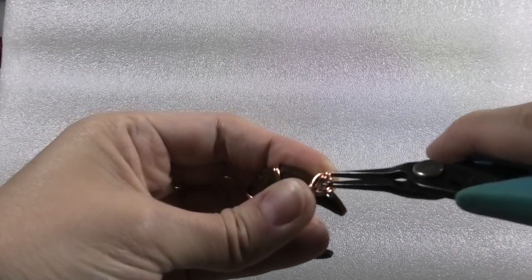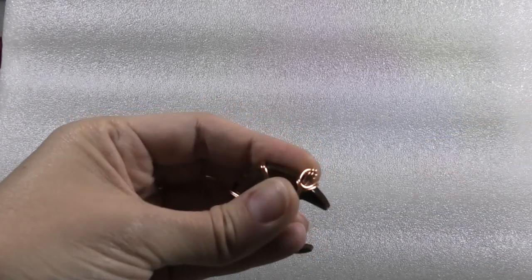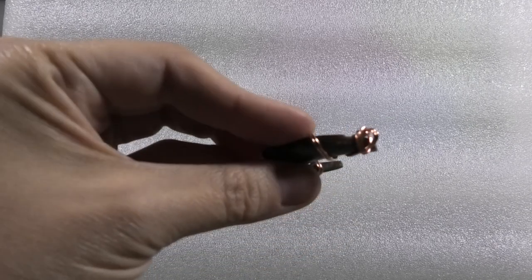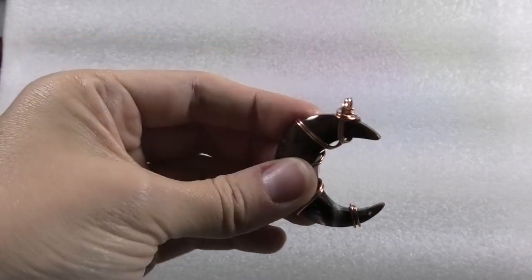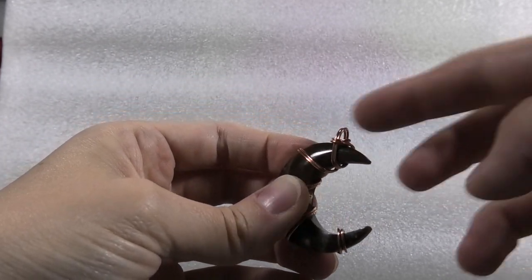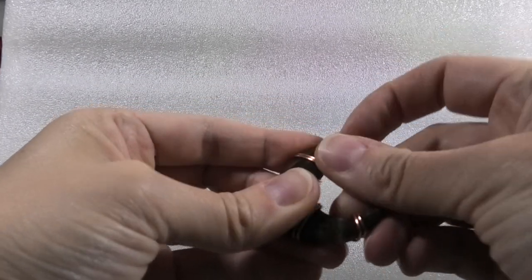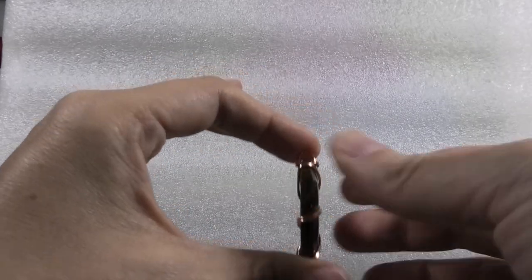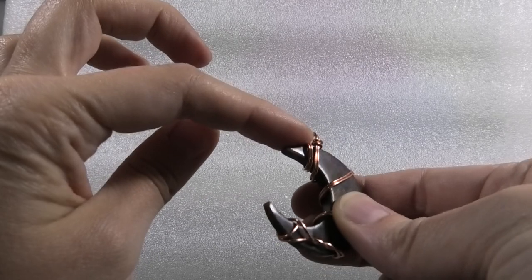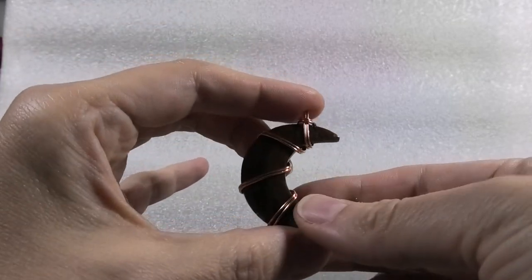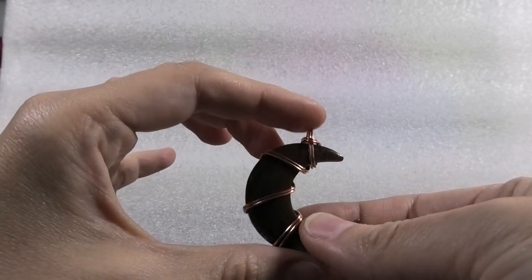So no, no wire ends will be exposed. Okay? So they're all tucked away in there. You can't feel any sharpness or see them really. They're just tucked away in there from the back. Just looks like that. Just, you can see it going across this way. And that is it.